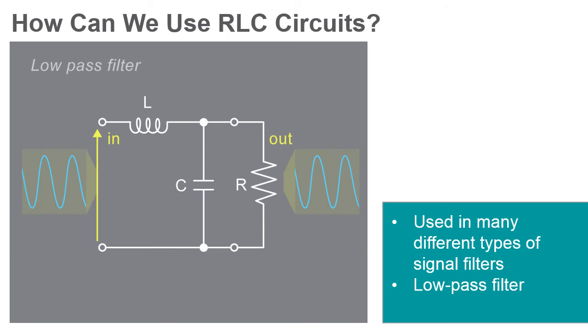A low-pass filter typically has the coil L in series with the resistor R, and the capacitor C in parallel with the resistor.